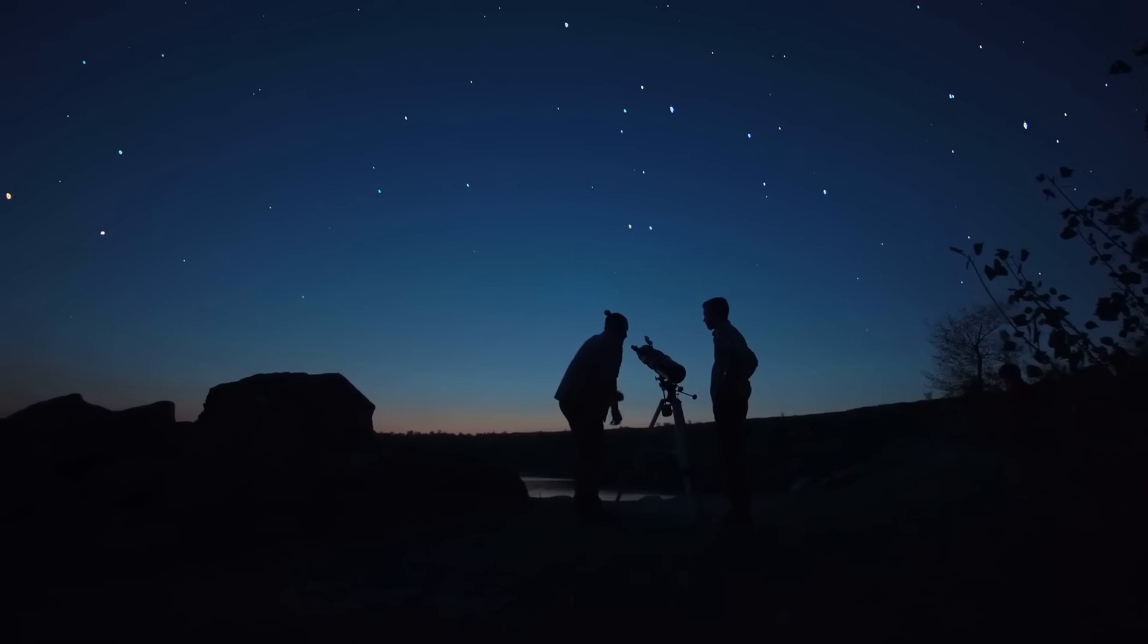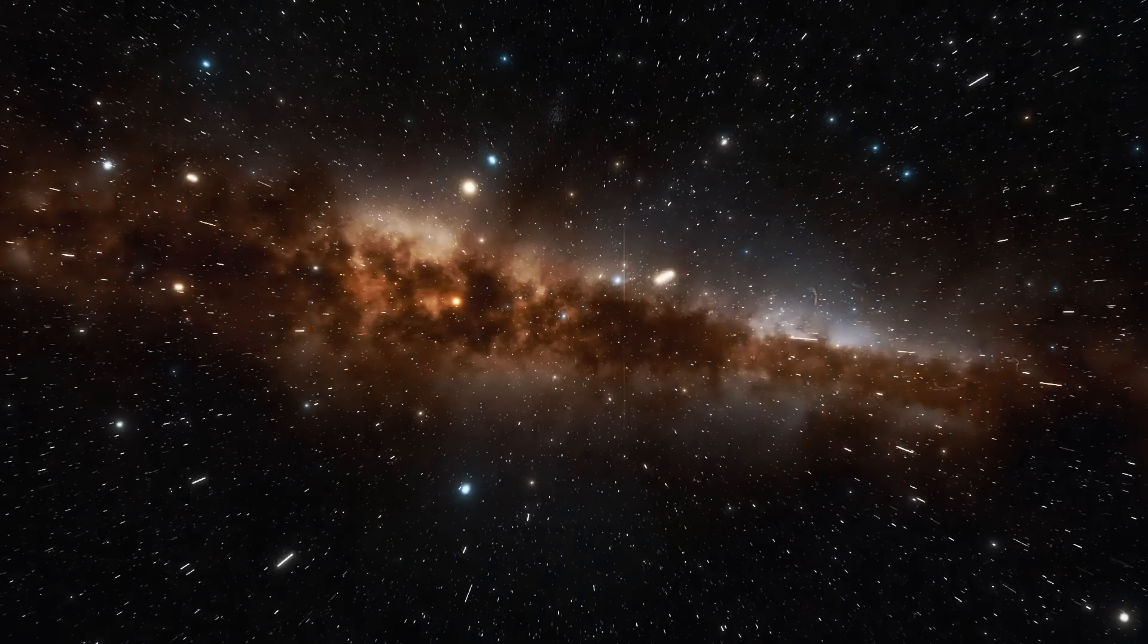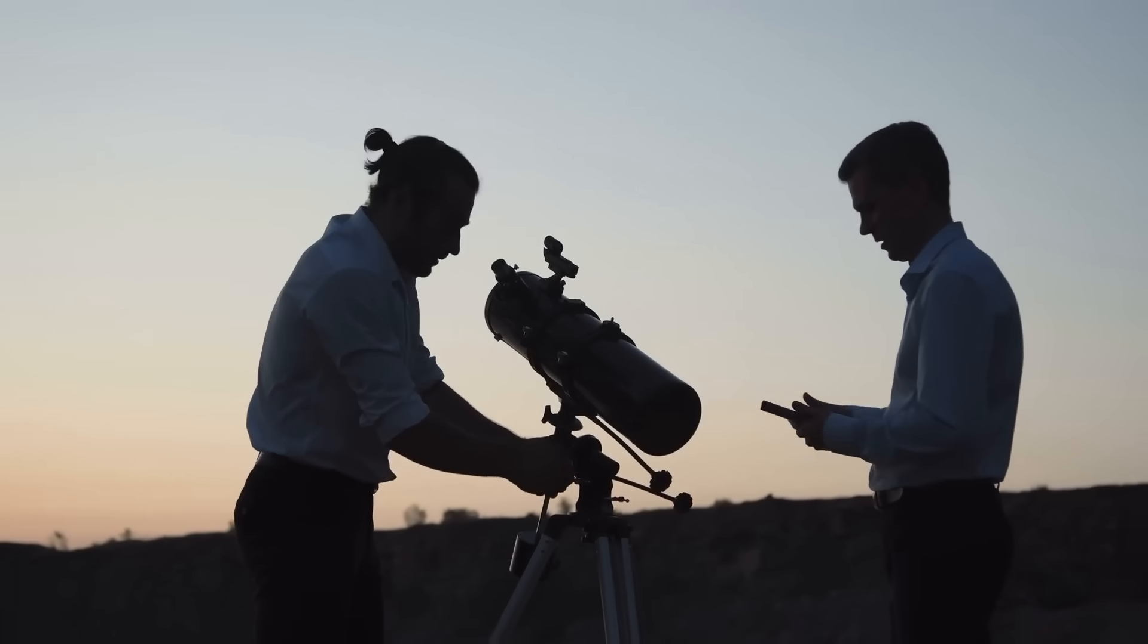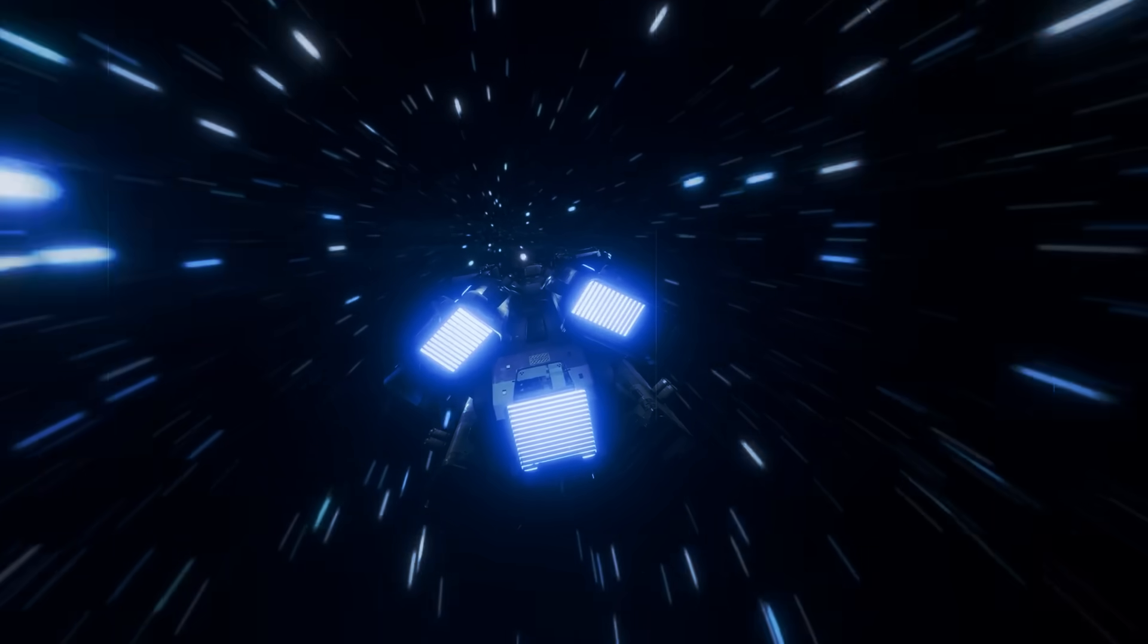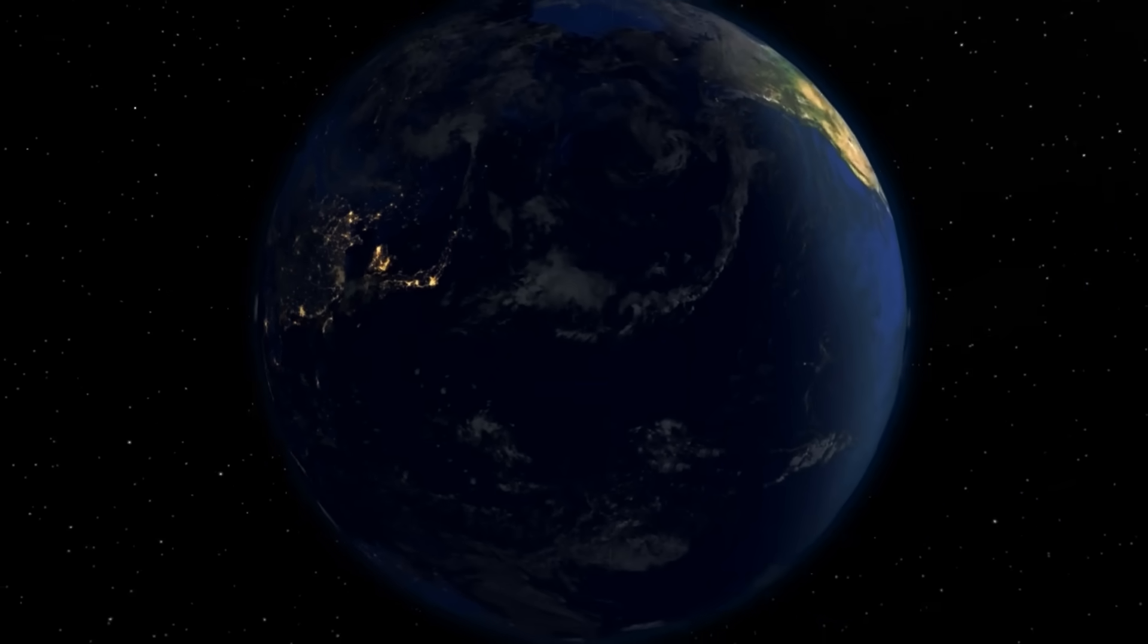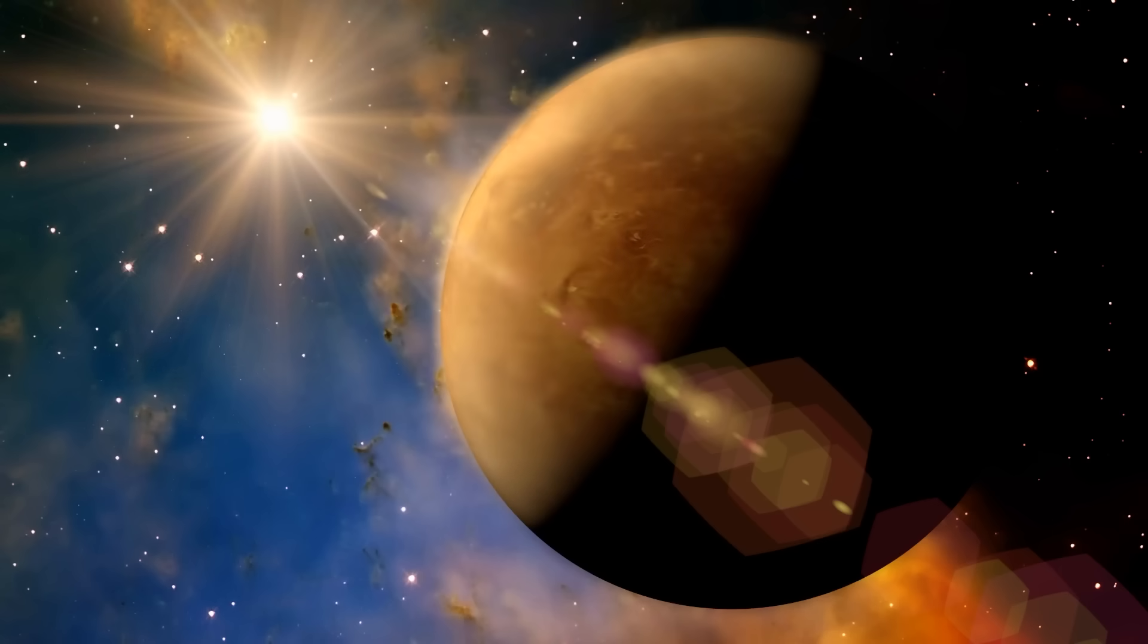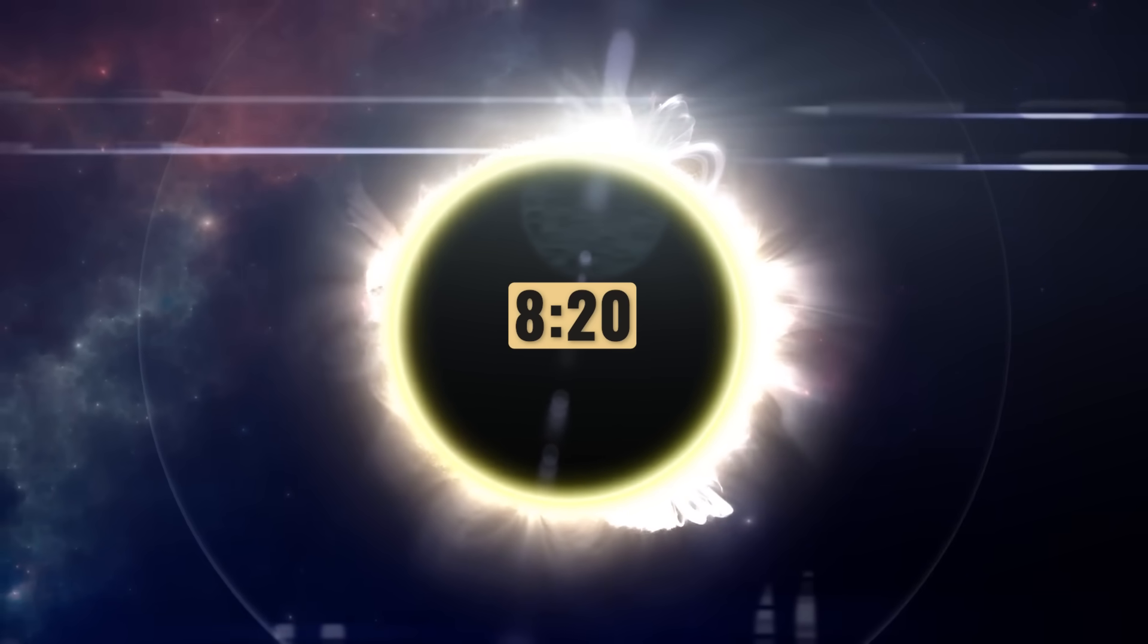Did you know that we take an optical journey through time every night when we marvel at the countless sparkling formations in the night sky? We don't see the stars and galaxies as they are now, but as they once were. The reason for this is simple: ultimately light also needs time to travel the gigantic distances of the universe and reach our earthly eyes. And this starts on a small astronomical scale. Even sunlight does not reach Earth instantly; it takes around 8 minutes and 20 seconds to reach us.